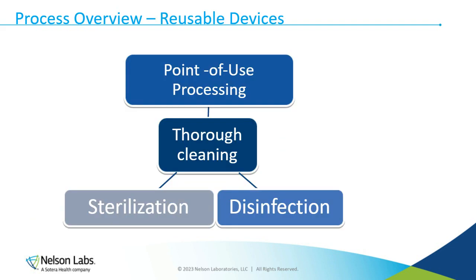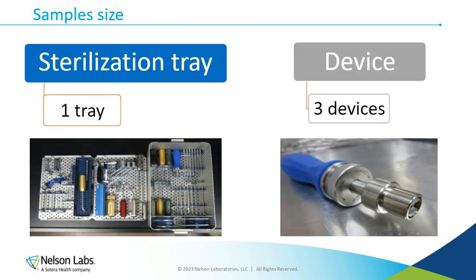Sterilization is just one part of the reusable medical device process, where we go through cleaning, disinfection, and then sterilization — and sterilization is a very important part of that process. When we go through a steam sterilization validation, one of the first things we need to think about are the sample sizes we're going to use. Generally, we'll ask for one completely populated tray if we're validating a sterilization set, or a minimum of three devices if we're validating an individual device.